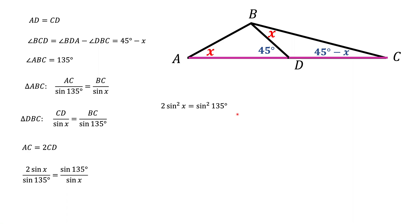The next step is to calculate sine of 135 degrees. First thing to notice is that 135 is 180 minus 45.